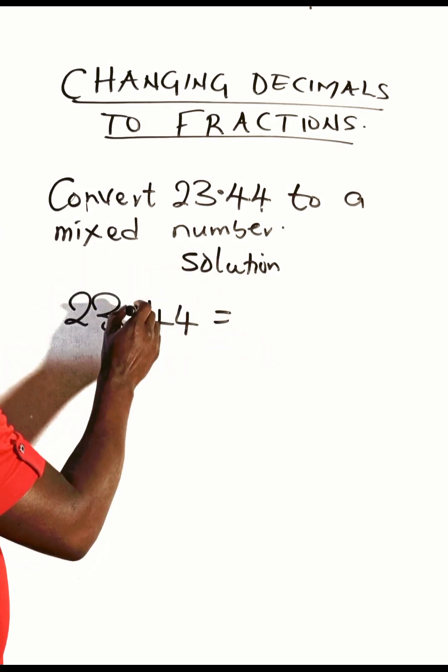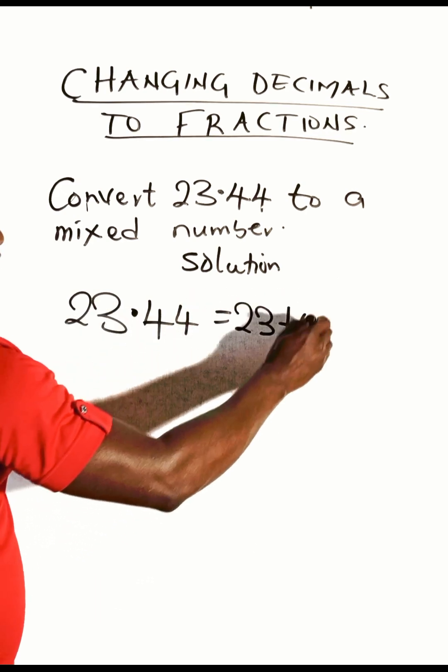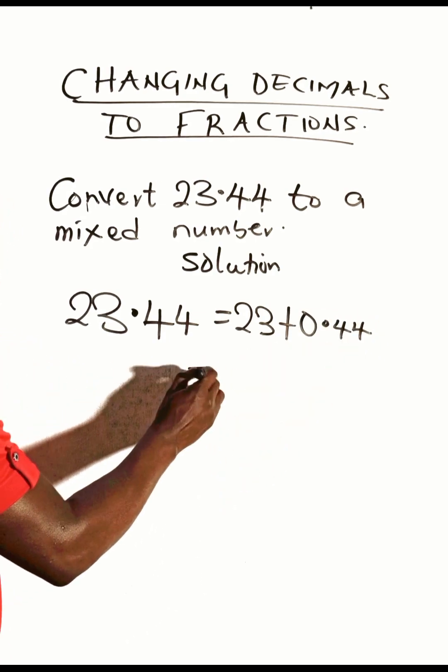This will be 23 plus 0.44. Now the next step is to change this decimal part to a fraction.